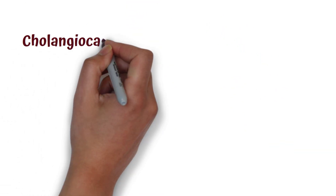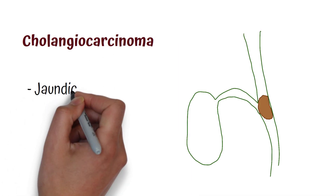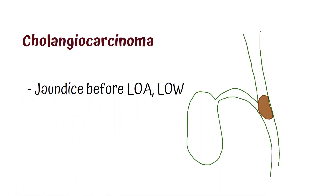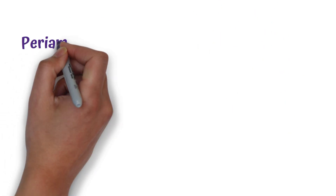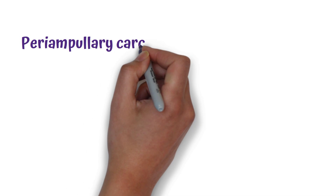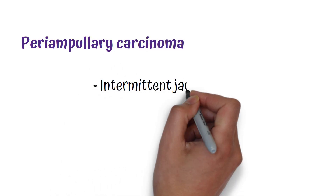However, in cholangiocarcinoma, jaundice will appear before loss of weight and loss of appetite. This is because in cholangiocarcinoma the carcinoma is in the common bile duct, therefore jaundice will occur first, and then later loss of appetite and loss of weight.